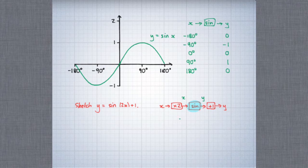So when x was minus 180 degrees, y was 0. When x was minus 90 degrees, y was minus 1, and so on. I'm just copying these values from the table at the top of the page.